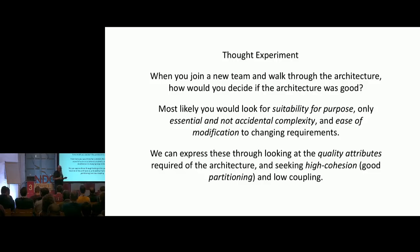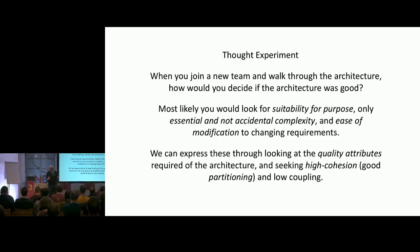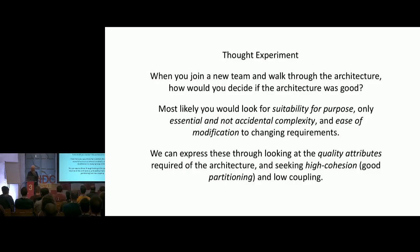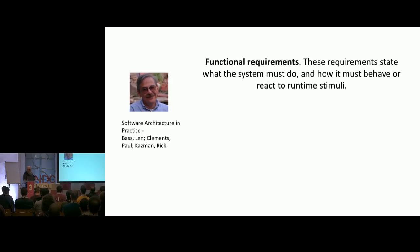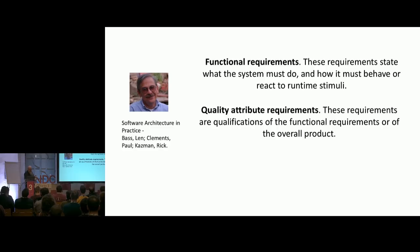What we might want to say is: go look at the quality attributes of the system — sometimes called 'the -ilities' — and also seek high cohesion and low coupling. If a software architecture has appropriate quality attributes and high cohesion and low coupling, we probably have a good architecture. The main place I've seen quality attributes defined is again in Len Bass's 'Software Architecture in Practice.'